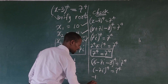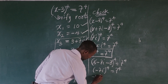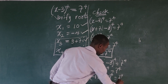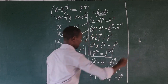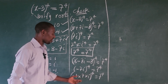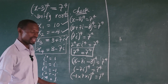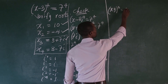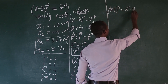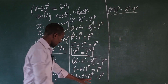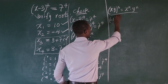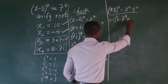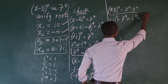We can rewrite -7i as (-1 × 7 × i). Raising everything to the power of 4, we apply the distributive law of exponents: (xyz)^n = x^n · y^n · z^n. So this becomes (-1)^4 times 7^4 times i^4, all equal to 7^4.